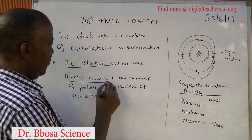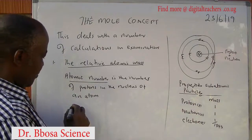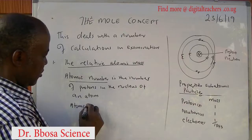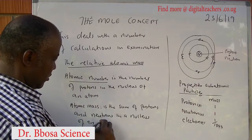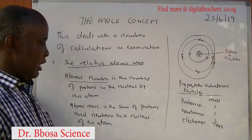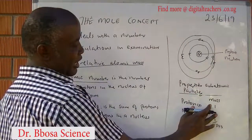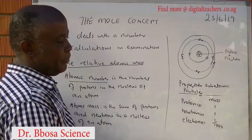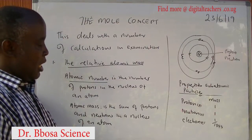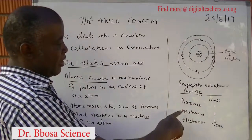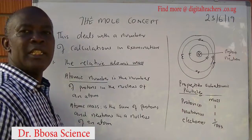Atomic number is the number of protons in the nucleus of an atom. We have seen that the mass of an electron is almost negligible compared to the mass of a proton and a neutron. So the mass of an atom — we add the number of protons and the number of neutrons in an atom.